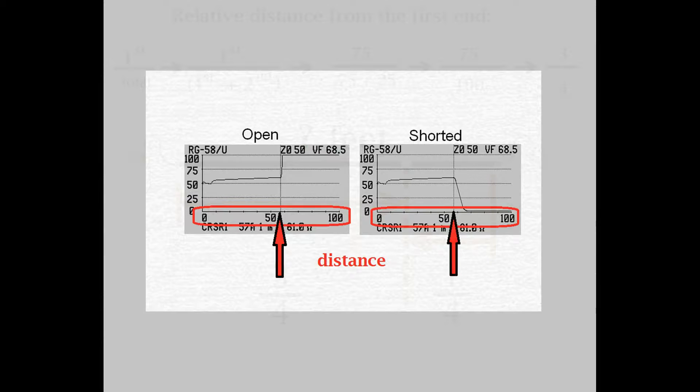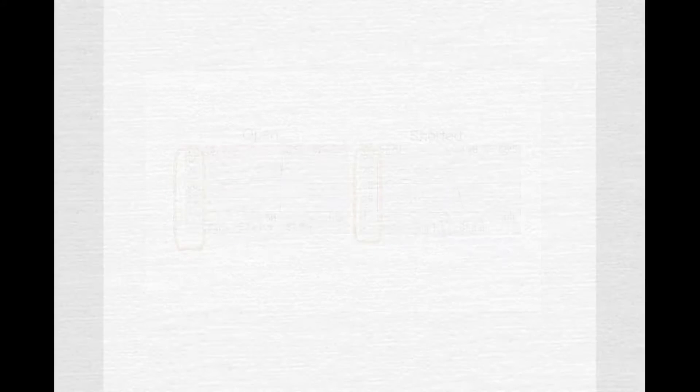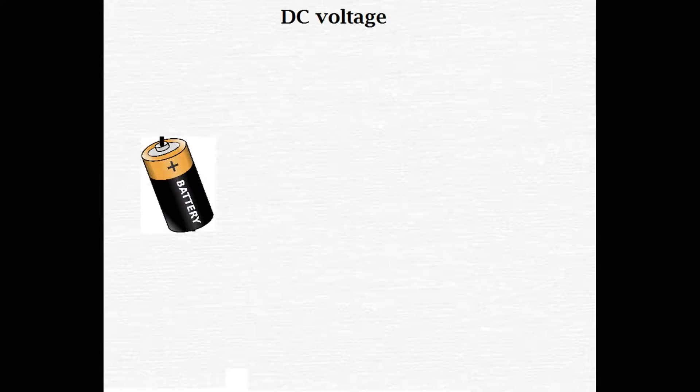Well, that about exhausts my knowledge base on velocity factor, which is used for determining distance. The scale on the left side of a TDR trace indicates impedance. Well, that's nice to know. But what exactly is impedance? To explain that, let's discuss this first.